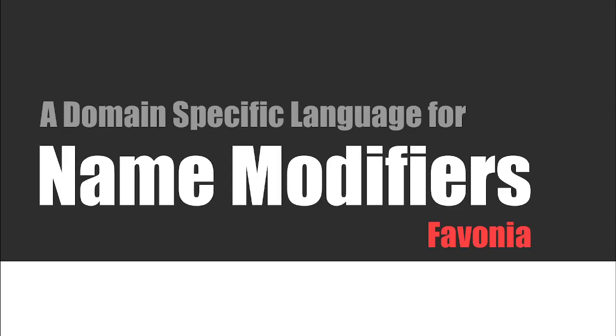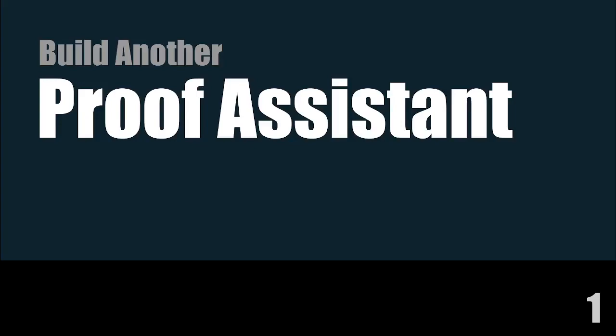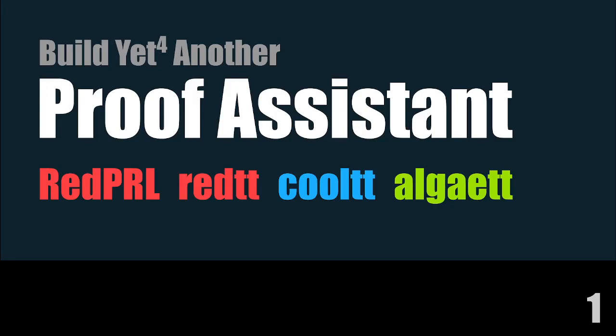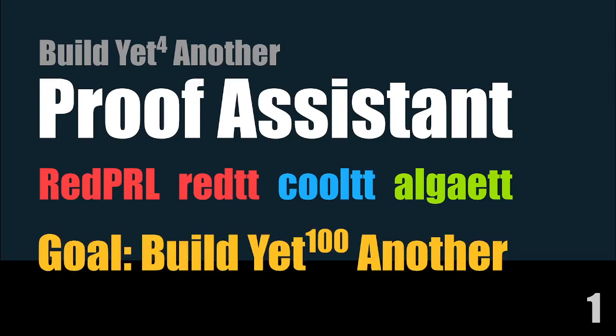Hi everyone. In this talk, I would like to talk about a domain-specific language for name modifiers. The reason we are doing this is because we want to build a proof assistant. I have been personally involved in building Redpro, Redtt, and Cooltt, and recently I have been working on LGTT. Each of them has its own purpose. Our goal is not to build a perfect proof assistant that we can live in forever — our goal is to build the next 700 proof assistants.